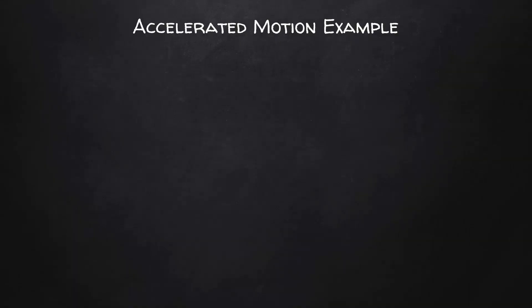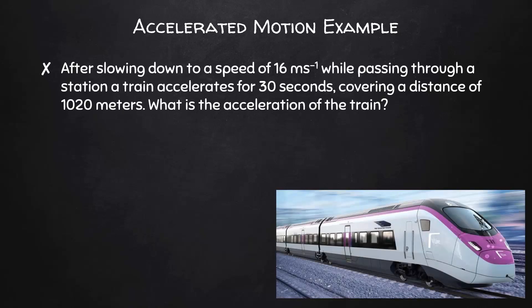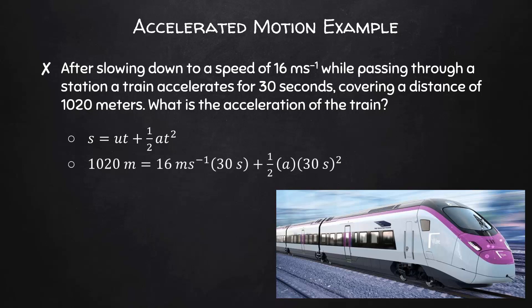One more example. After slowing down to a speed of 16 meters per second while passing through a station, a train accelerates for 30 seconds, covering a distance of 1,020 meters. What is the acceleration of the train? Based on our givens and unknown, we'll use S equals UT plus one-half AT squared. Substituting the given values, we calculate the acceleration to be 1.2 meters per second squared.